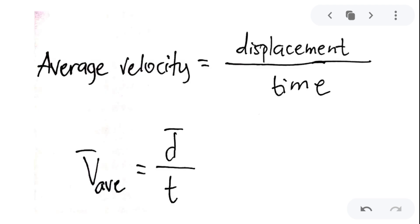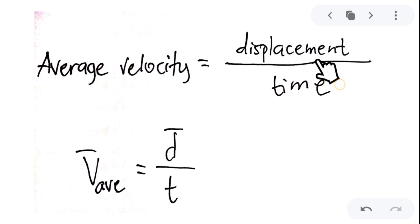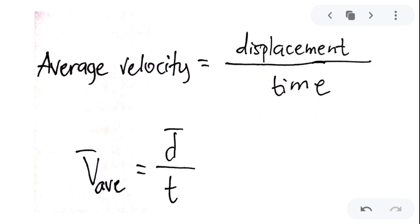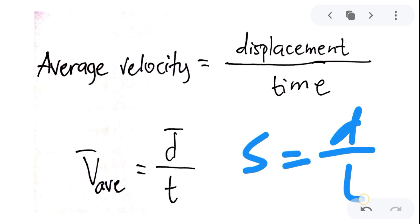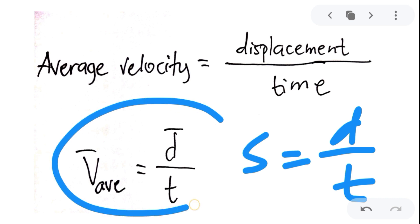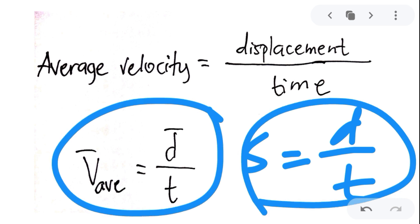Velocity is the vector version of speed — it specifies a direction. Displacement is the vector version of the scalar quantity distance. The formula is similar to speed: it is equivalent to distance over time. The difference is that velocity specifies a direction, unlike speed, which is a scalar.